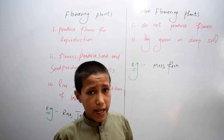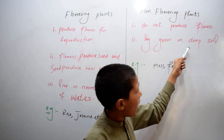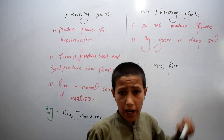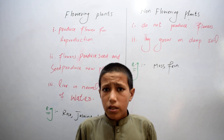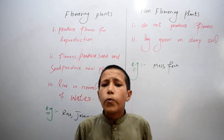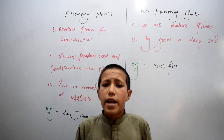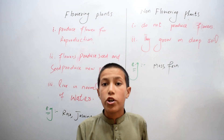The second characteristic is they grow on dim soil. Dim soil means where there is more water and moisture.